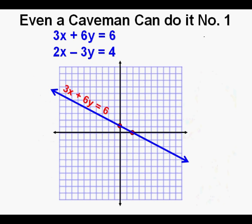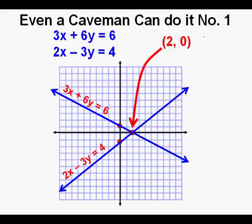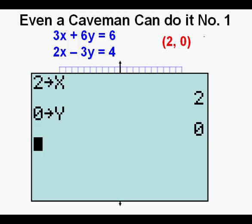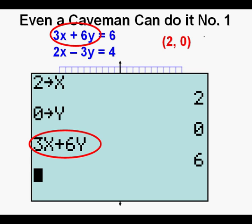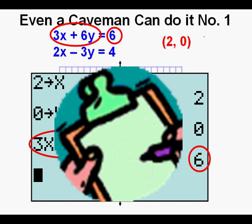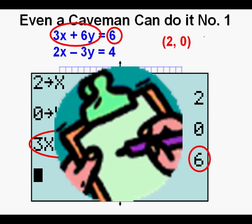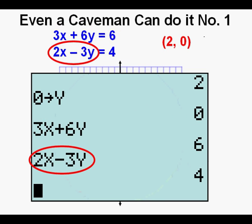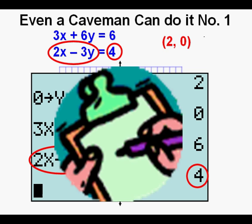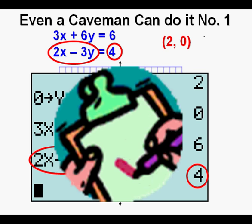Here is 3x plus 6y equals 6 graphed, and here is 2x minus 3y equals 4 graphed. The solution appears to be 2 comma 0. We check by storing 2 for x and 0 for y in the calculator. Entering 3x plus 6y gives 6 — check, this equation is satisfied. Entering 2x minus 3y gives 4 — check. Og is right again.